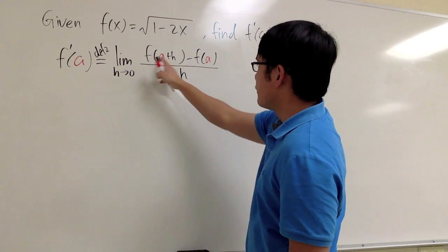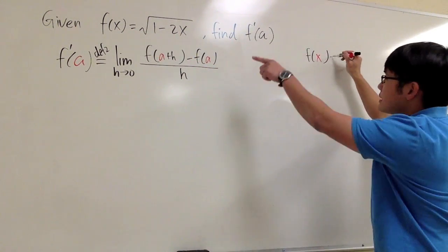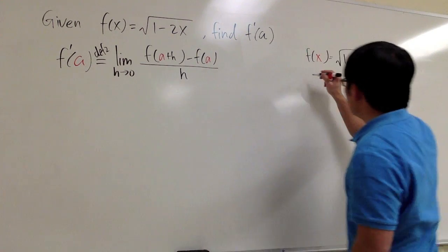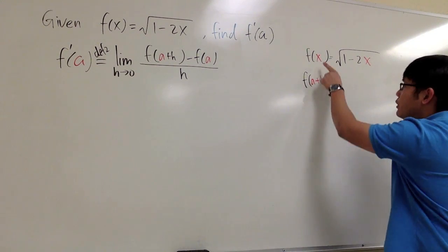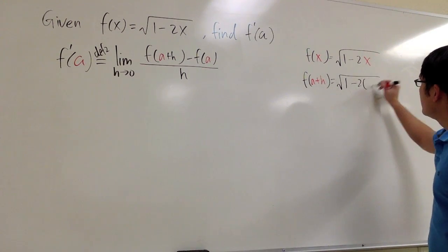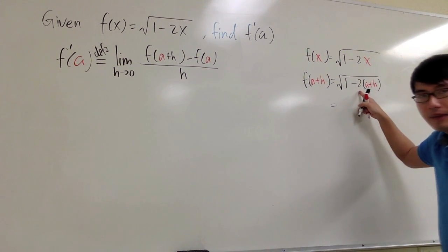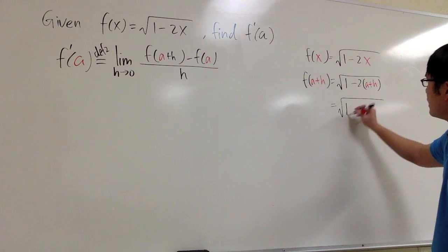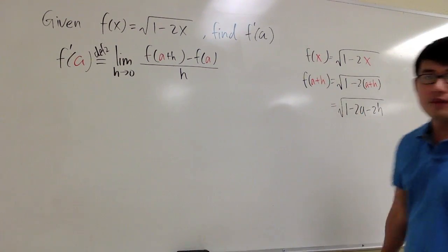Let's take a look at how f of a plus h looks. We know f of x equals square root of 1 minus 2x. To find f of a plus h, all we need to do is plug a plus h in for x. So we have 1 minus 2 times the quantity a plus h. Distributing the minus 2 into the parentheses, we have 1 minus 2a minus 2h — that is f of a plus h.